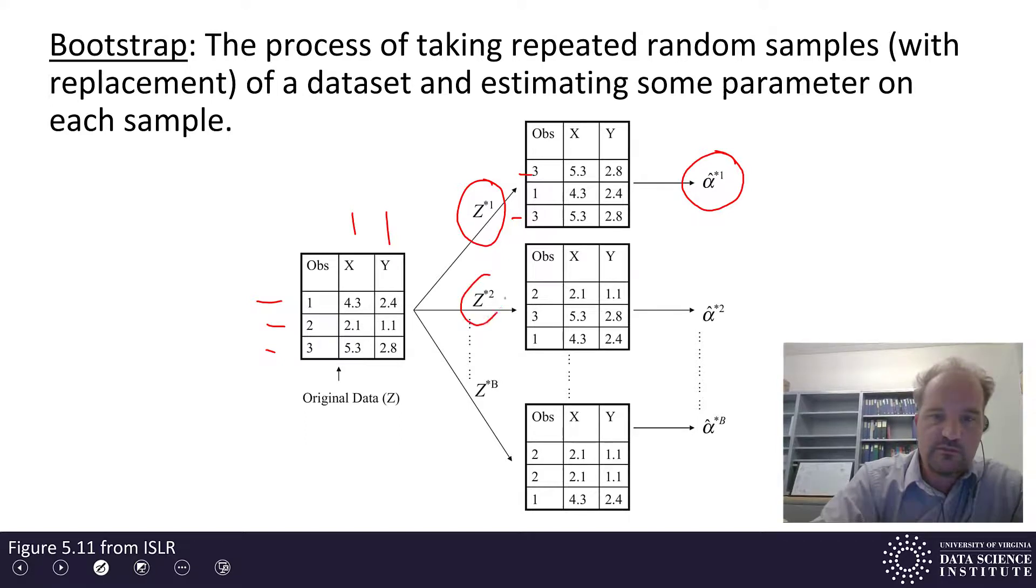And then we take a second Bootstrap random sample, and this one in this case happens to have 1, 2, and 3 in it, and then we estimate alpha hat with an exponent of star 2 to say this is from the second data set,